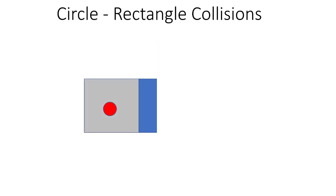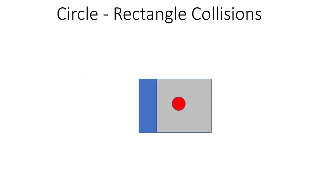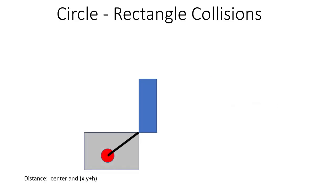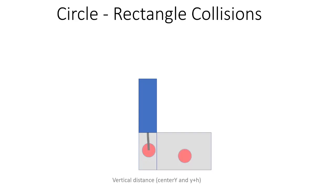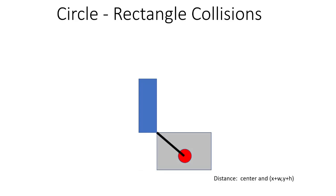In the left zone, where the center of the circle is left of the rectangle but vertically between the top and bottom edges, all we need to do is check the horizontal distance between the center of the circle and the left edge of our rectangle. Same thing with the right zone — check the horizontal distance between the center of the circle and the right edge, which has an x-coordinate of x plus the width. In the lower left zone, we check the distance between the center of the circle and the bottom left coordinate. In the bottom zone, we check the vertical distance between the center of the circle and the bottom of the rectangle. And in the lower right zone, we check the distance between the center of the circle and the bottom right corner of the rectangle.